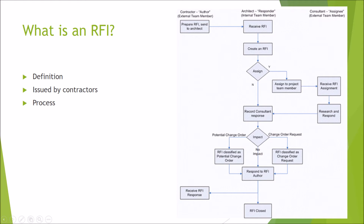If it has no impact, the architect responds to the RFI author. If it has an impact, it is either classified as a change order request or as a potential change order. Either way, the architect responds to the RFI author and then the RFI is either closed or there is a response RFI.